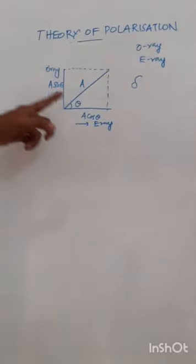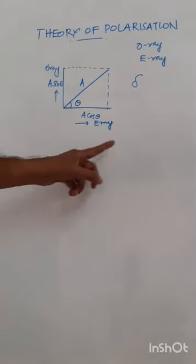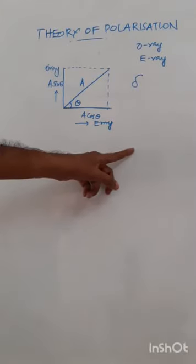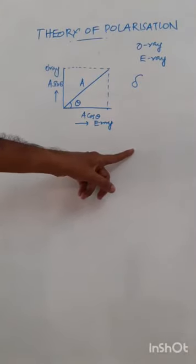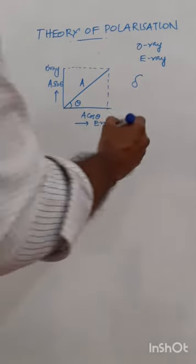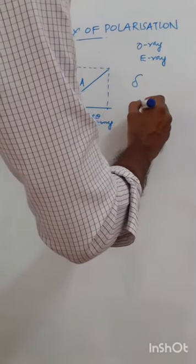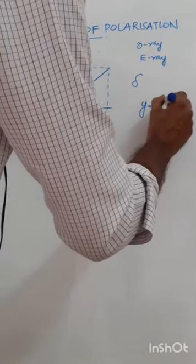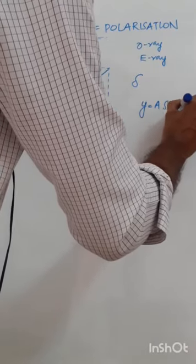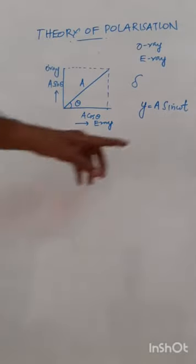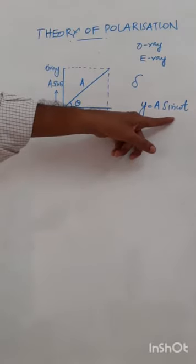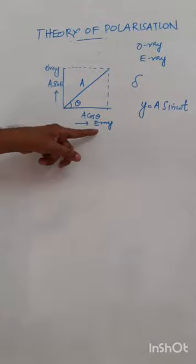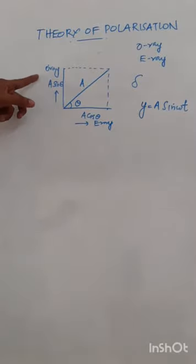Corresponding to the path difference, a phase difference will be introduced between them. Let us assume delta is the phase difference introduced between the two rays — that is the E ray and the O ray — when they come out of the crystal. If we represent E ray and O ray with mathematical equations, we will use the general equation of a wave: y = A sin(omega t).